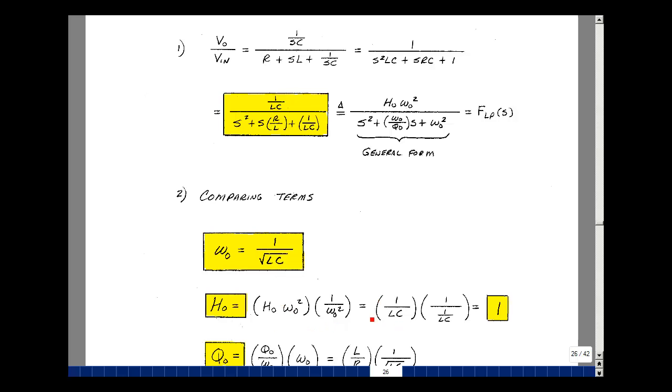So this is the term 1 over LC, and then if I take this term and square it, take its reciprocal, I have 1 over LC. This cancels with this, and I just get 1.